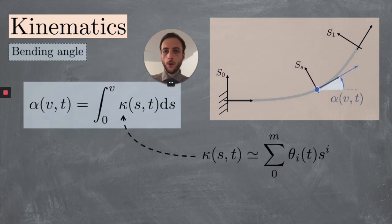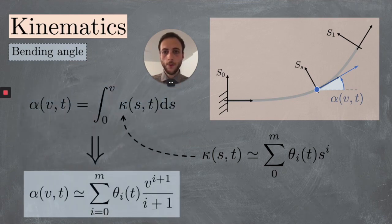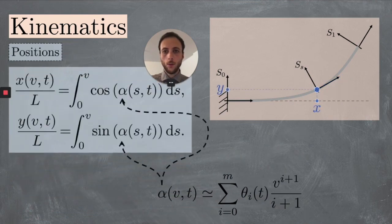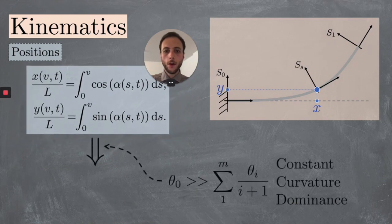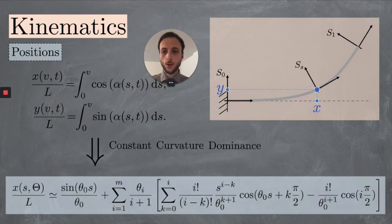Now we can evaluate the posture at each point S, which has a solution in closed form, and the configuration x and y, which under a hypothesis of dominant constant curvature, allows as well a solution in closed form.